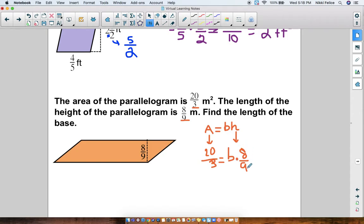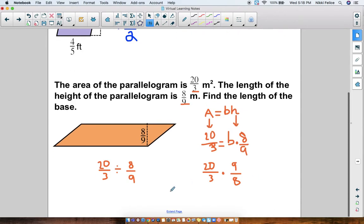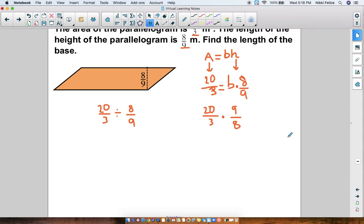How do we solve to figure out what B is? We got to do the inverse operation. This is multiplication, so we need to do division. We are going to be doing 20 thirds divided by 8 ninths. But you know that to divide a fraction, what do we do? We do keep, change, flip. So really we're going to be doing 20 thirds times 9 over 8.